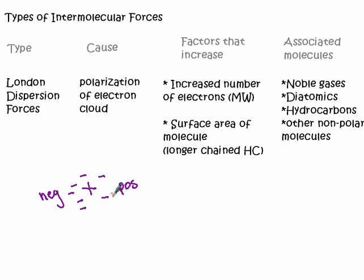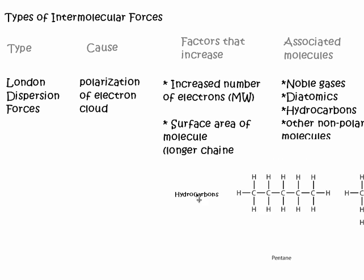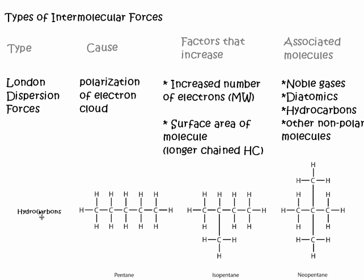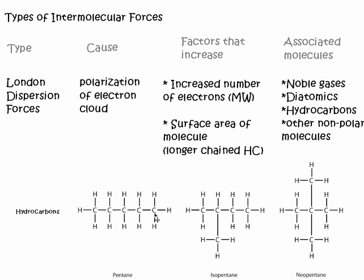Also, the surface area of the molecules themselves, and this is especially true when we talk about hydrocarbons. I have an example here. Here is pentane, a straight-chain pentane. It would have the highest intermolecular attractions. Isopentane would be lesser, and neopentane would be the lowest.